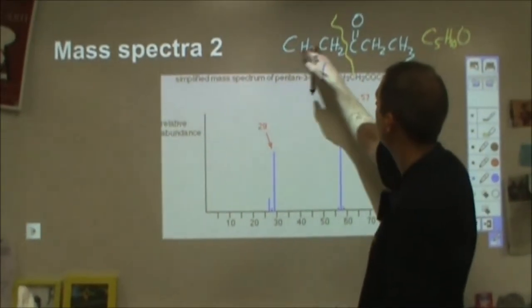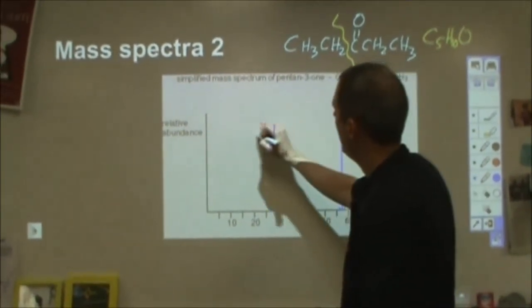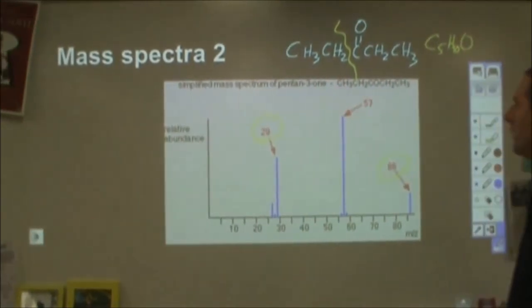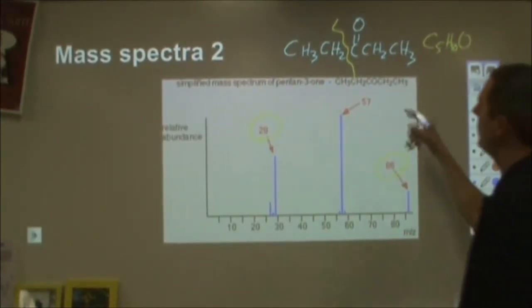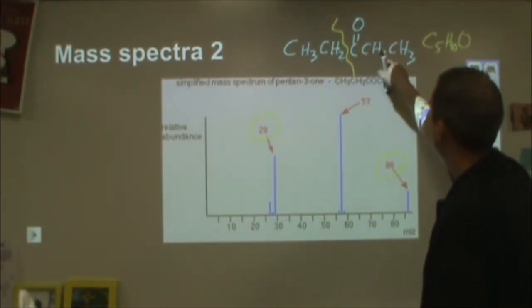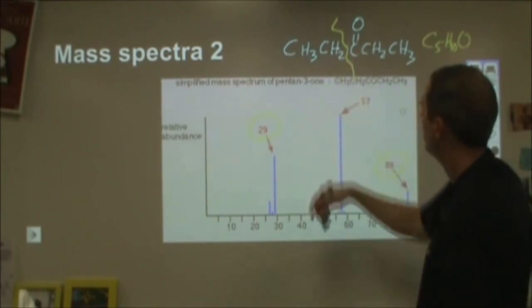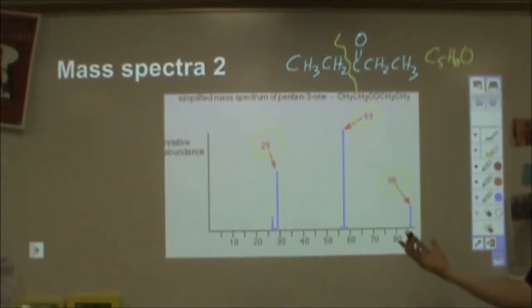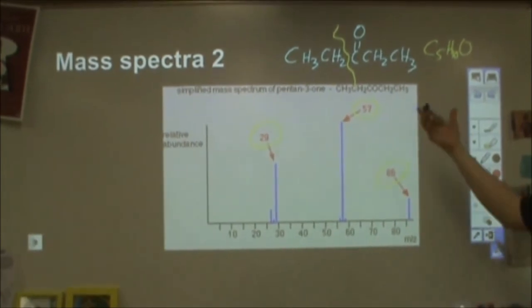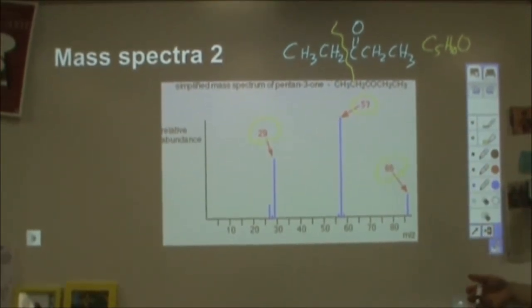And then for our two peaks here, we have the CH3, CH2, that's C2, H5. That's 29 for the mass of that. And for the other one, we have C3, that's 36, plus 5 is 41, plus 16 is 57. So this one is actually really, really good in agreement with what we would expect to see from this.